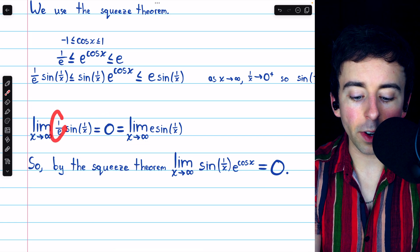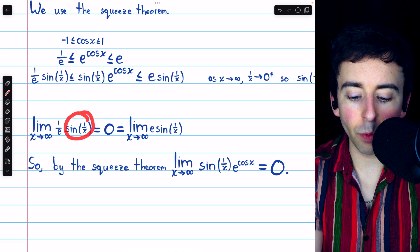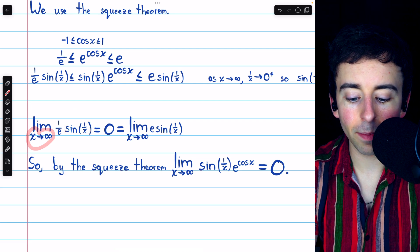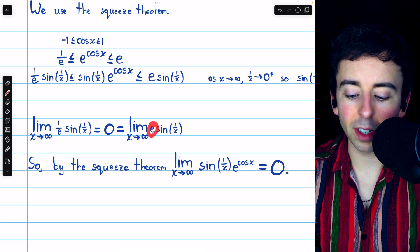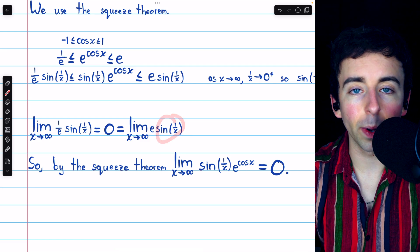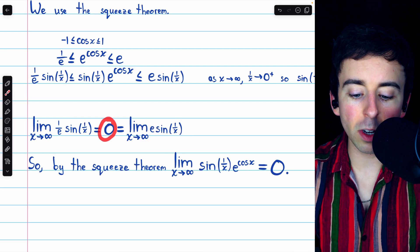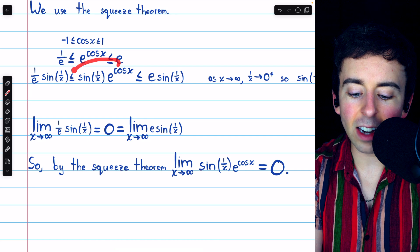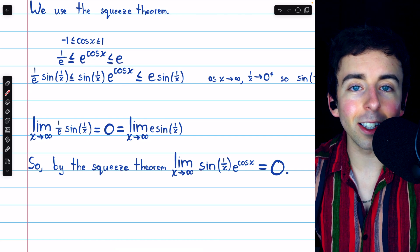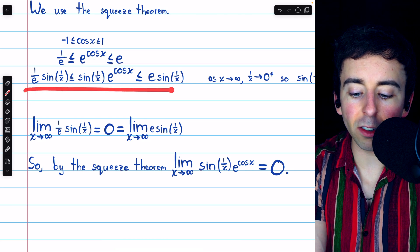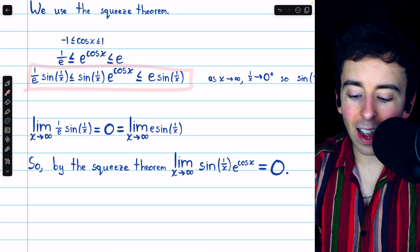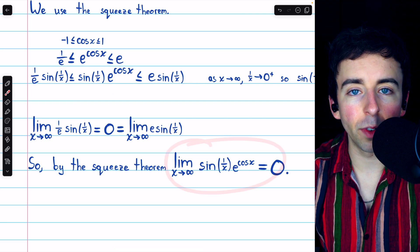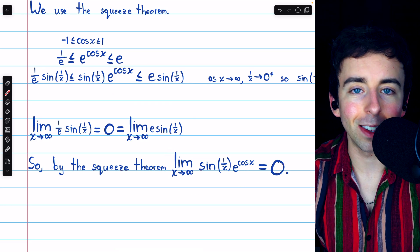On the left, 1 over e is just a fixed number, and sine of 1 over x goes to 0 as x goes to infinity. On the right, e is just a fixed number, and sine of 1 over x is going to 0. So, both of these limits are equal to 0, and since sine of 1 over x times e to the cosine x is squeezed between these two functions, its limit as x goes to infinity must also be 0.